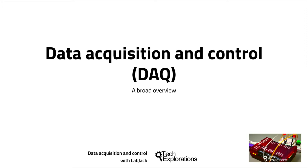Data acquisition is software and hardware that we use to measure the physical characteristics of real-world processes. With the term control, we refer to the ability to make changes to specific characteristics in the real world. We use sensors to convert real-world signals to binary code so that computers can store and process them, and we use actuators to control specific characteristics in the real world.